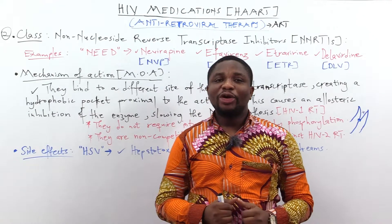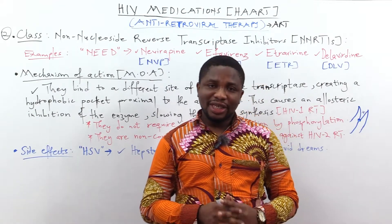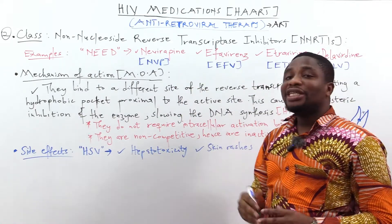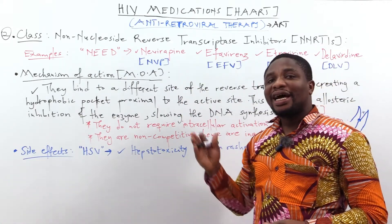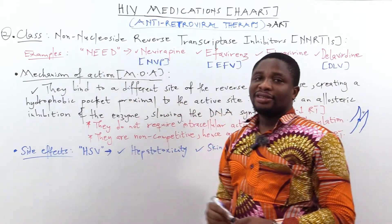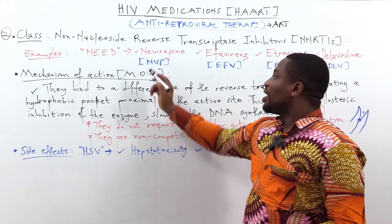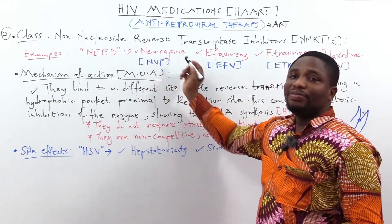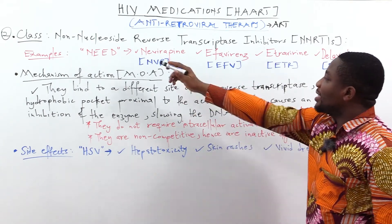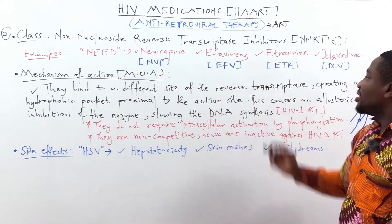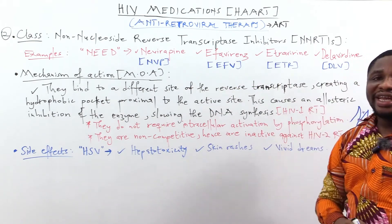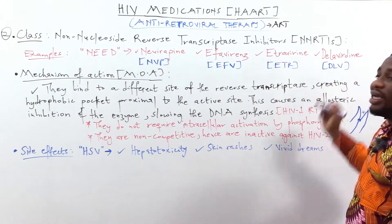The second class is the non-nucleoside reverse transcriptase inhibitors, written as NNRTIs. To easily remember the medications, think of the mnemonic NEED: N is nevirapine (NVP), the first E is efavirenz (EFV), the second E is etravirine (ETR), and D is delavirdine (DLV).